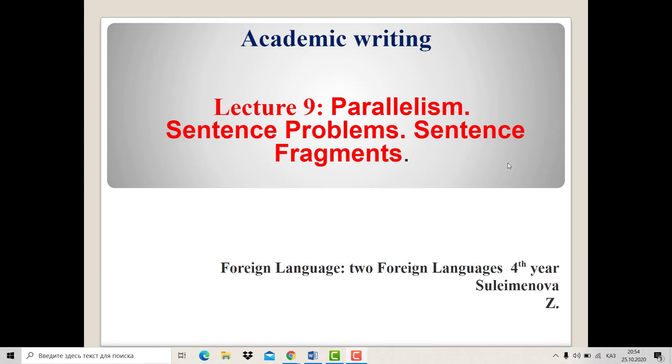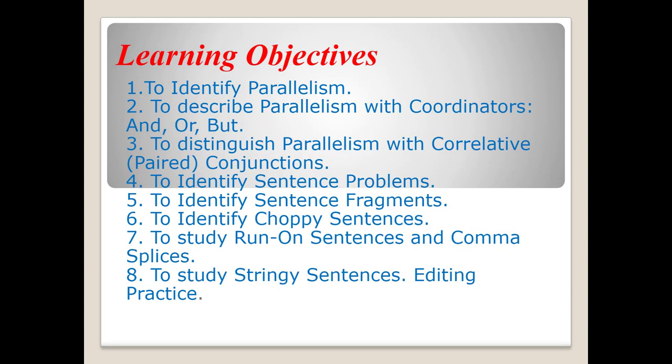Academic Writing, Lecture 9: Parallelism and Sentence Problems. Learning objectives include: identifying parallelism, describing parallelism with coordinators (and, or, but), distinguishing parallelism with correlative conjunctions, identifying sentence problems such as sentence fragments, choppy sentences, run-on sentences, comma splices, and stringy sentences, as well as editing practice.